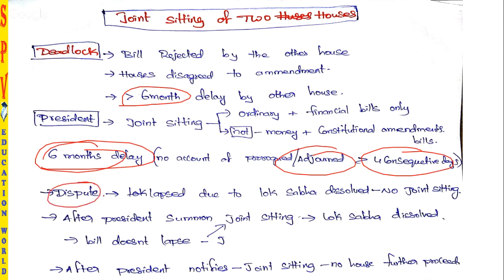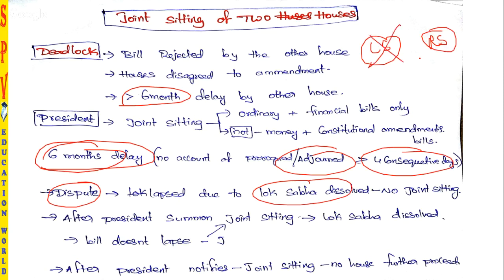If there is a dispute between Lok Sabha and Rajya Sabha and Lok Sabha is dissolved, there is no joint sitting — the bill lapses. This statement is very important. Be careful: if Lok Sabha is dissolved during a deadlock before the President announces a joint sitting, the bill lapses and there is no joint sitting.